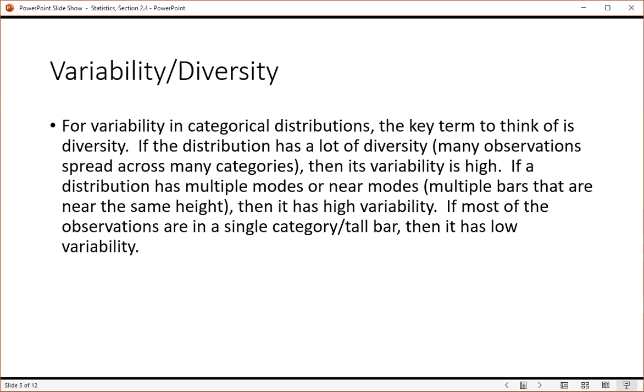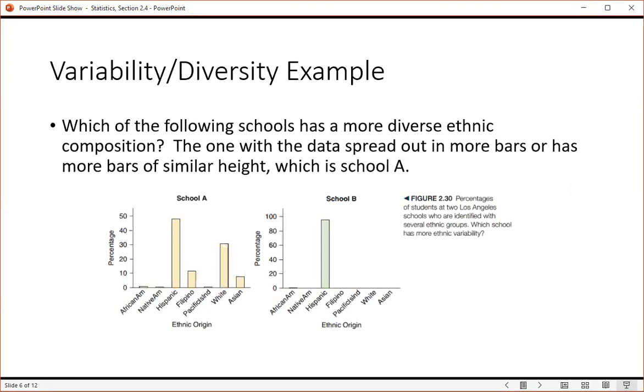If most of the observations are in a single category or a single tall bar, then it has low variability. So here are two examples.